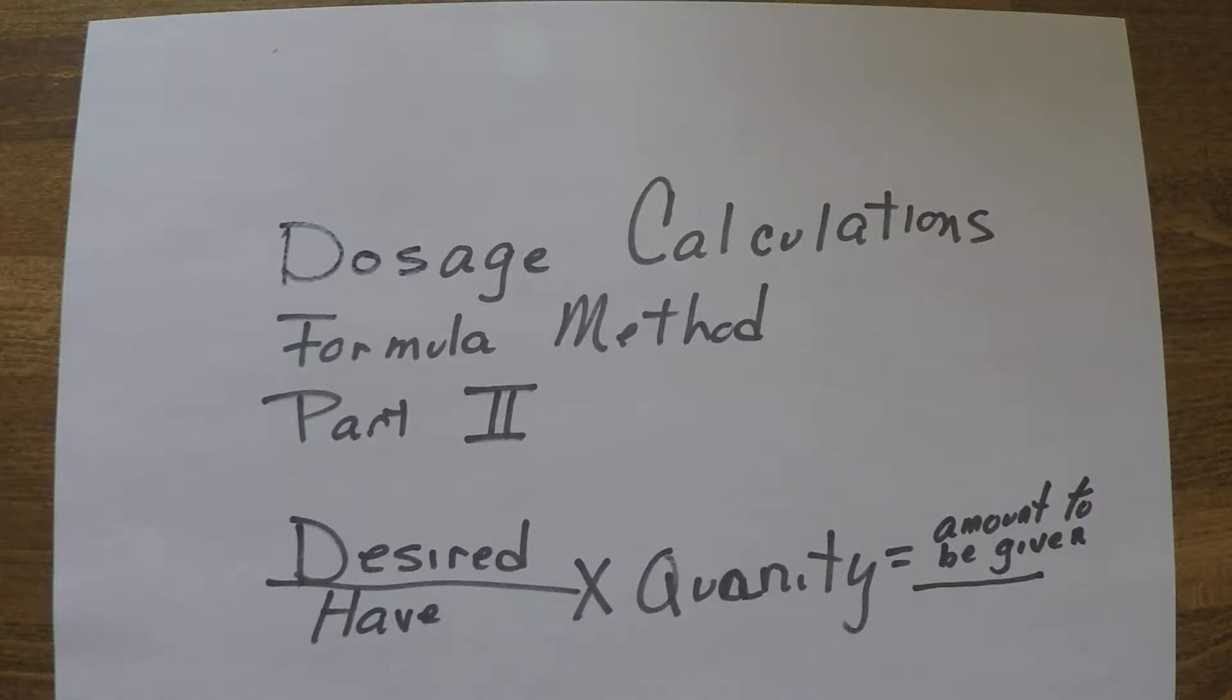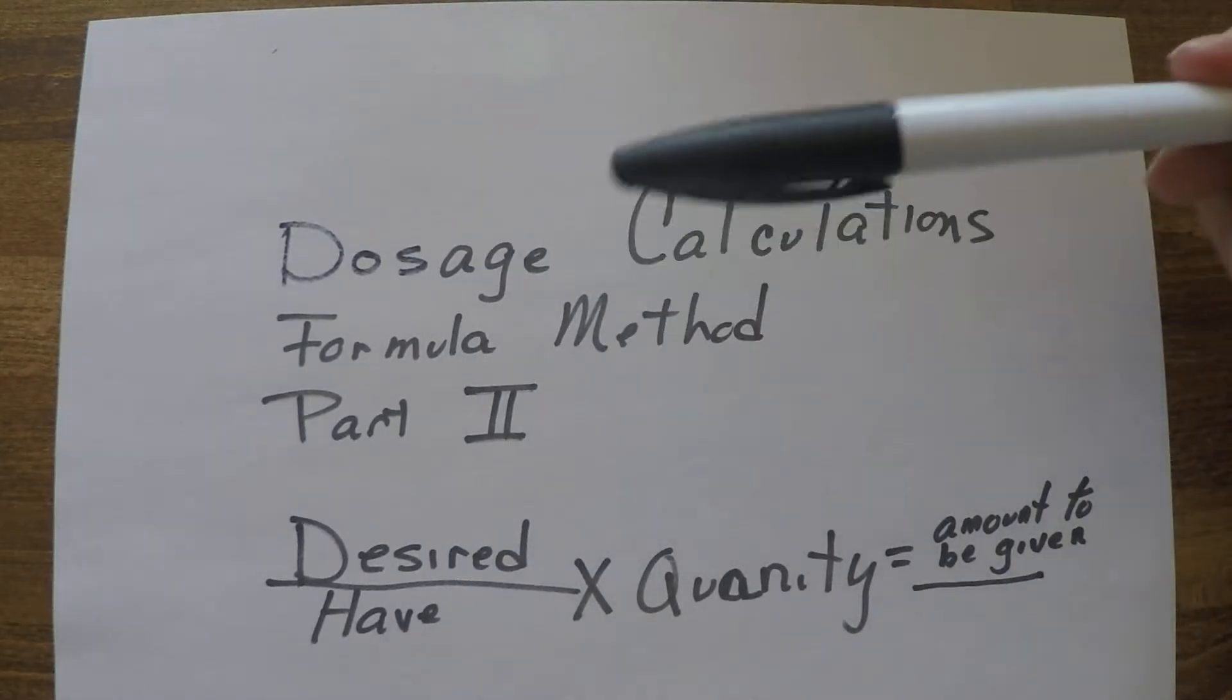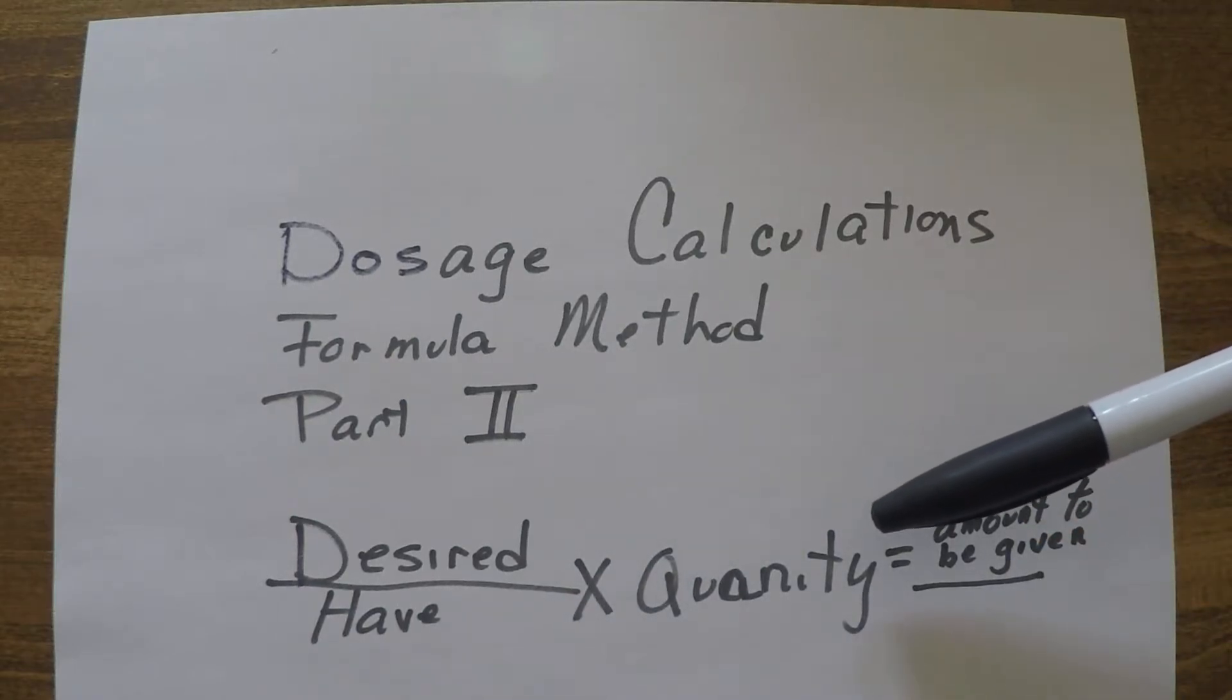So the formula method is the desired divided by what you have times the quantity equals the amount to be given. So let's go over a couple examples.